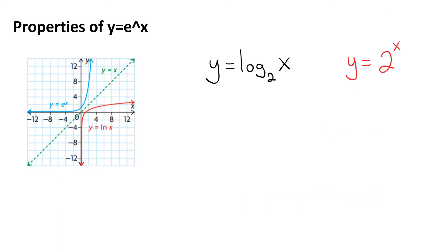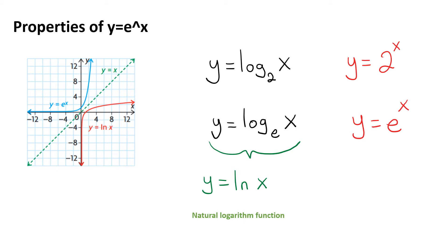When we look at the properties of y equals e to the power of x, it has the same properties as other exponential functions. One of the main properties is that the logarithm function is the inverse of the exponential function. For example, y equals log base 2 of x is the inverse of y equals 2 to the power of x. Same way, the inverse of y equals e to the power of x is log base e of x, which can also be written as y equals ln x — the natural logarithm function.